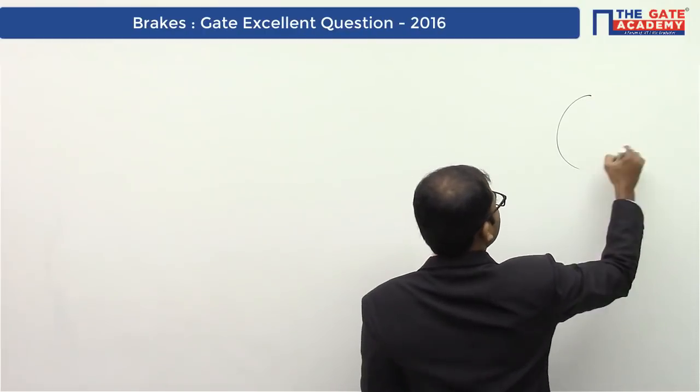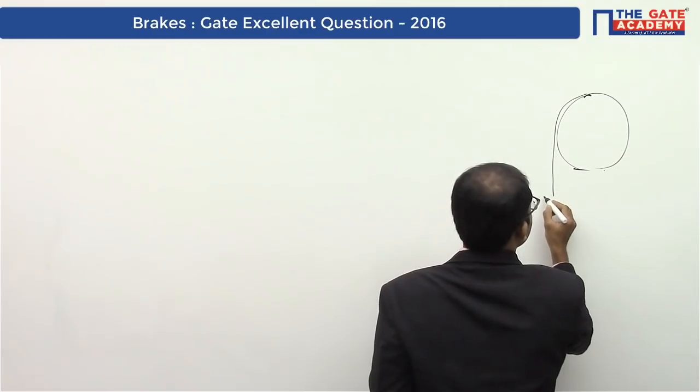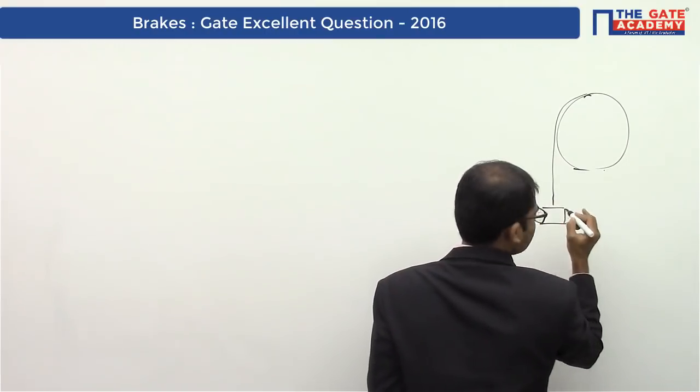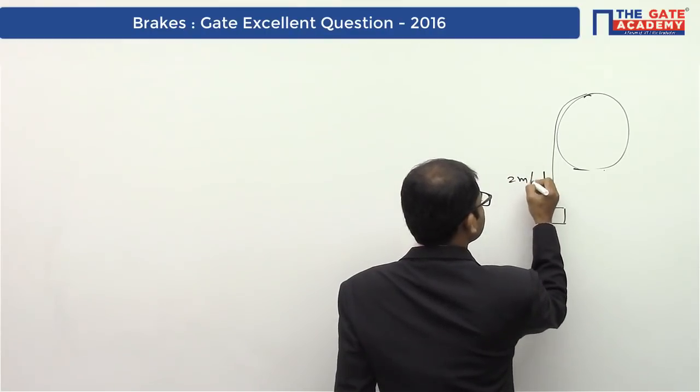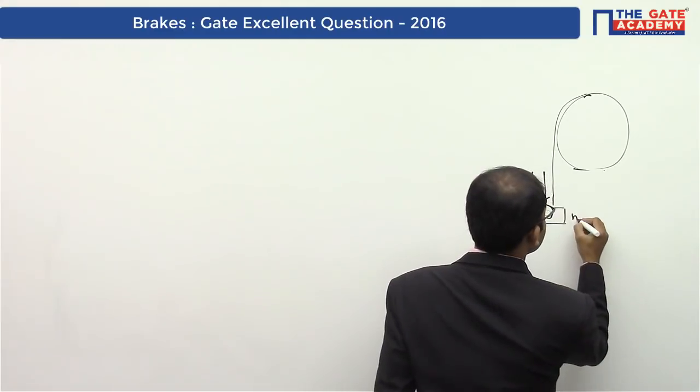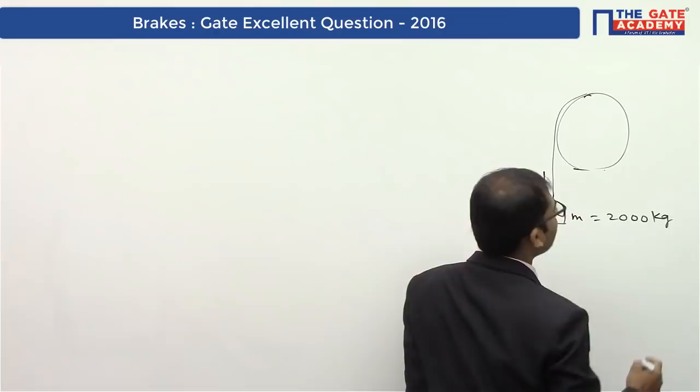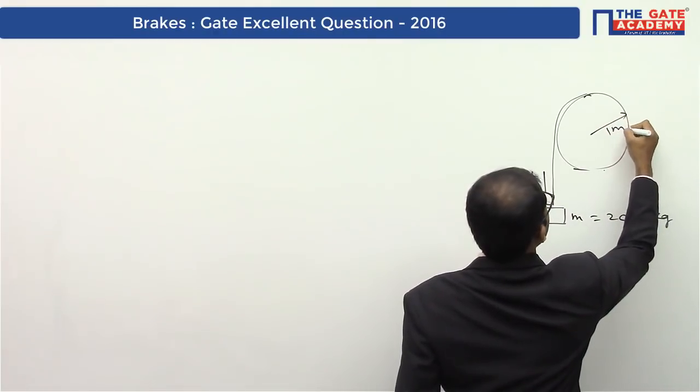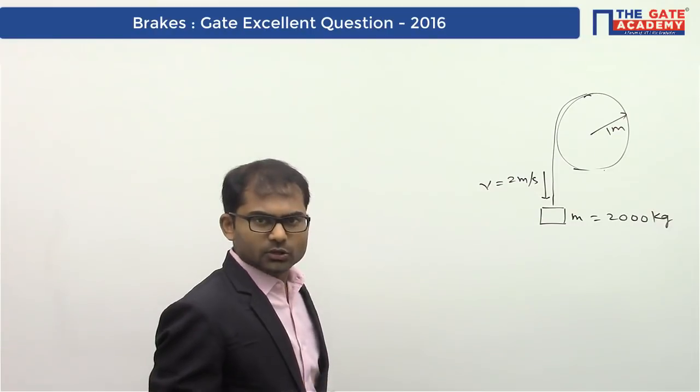Let's take the diagram. The pulley is there and the block is being lowered with velocity 2 m/s, so this is V here. Mass is 2000 kg and the radius is 1 meter, as the diameter is 2 meters.